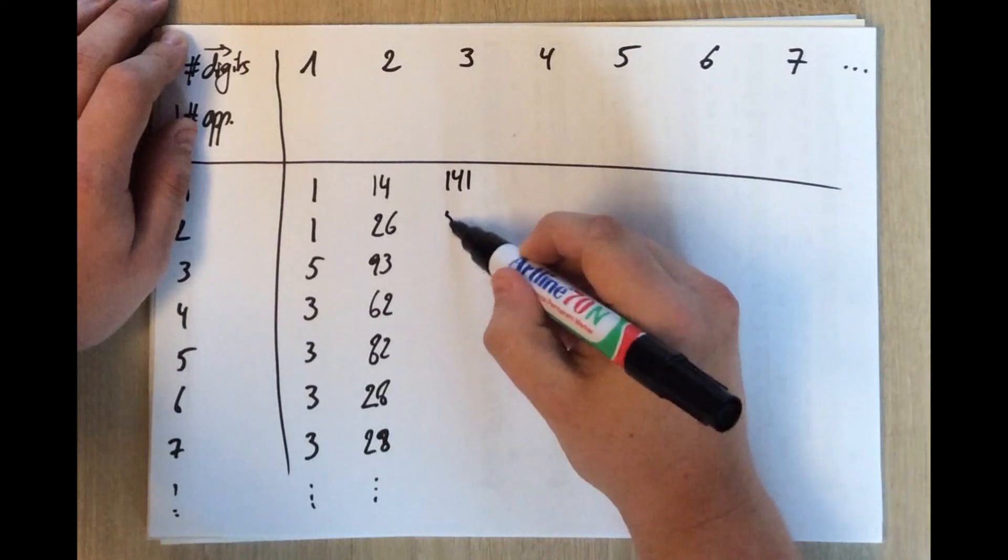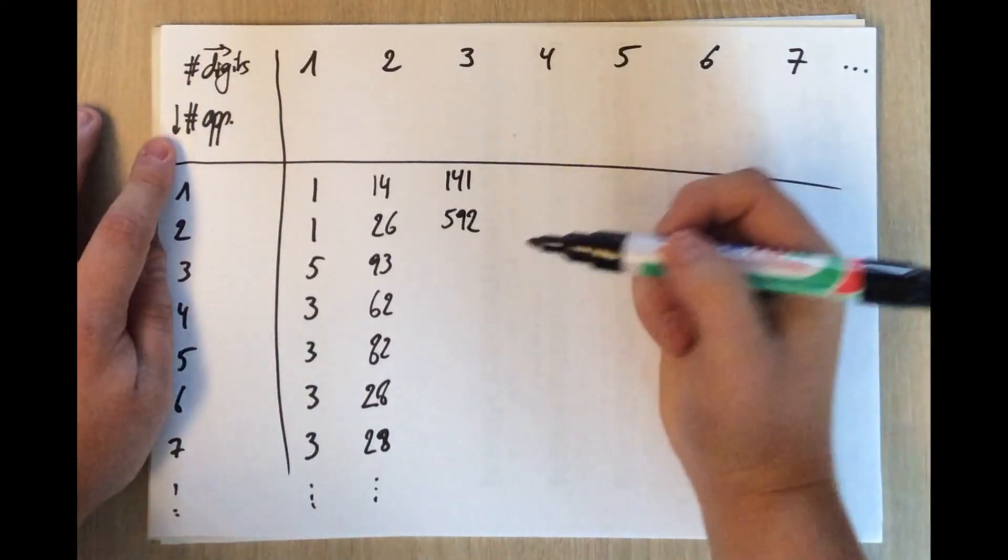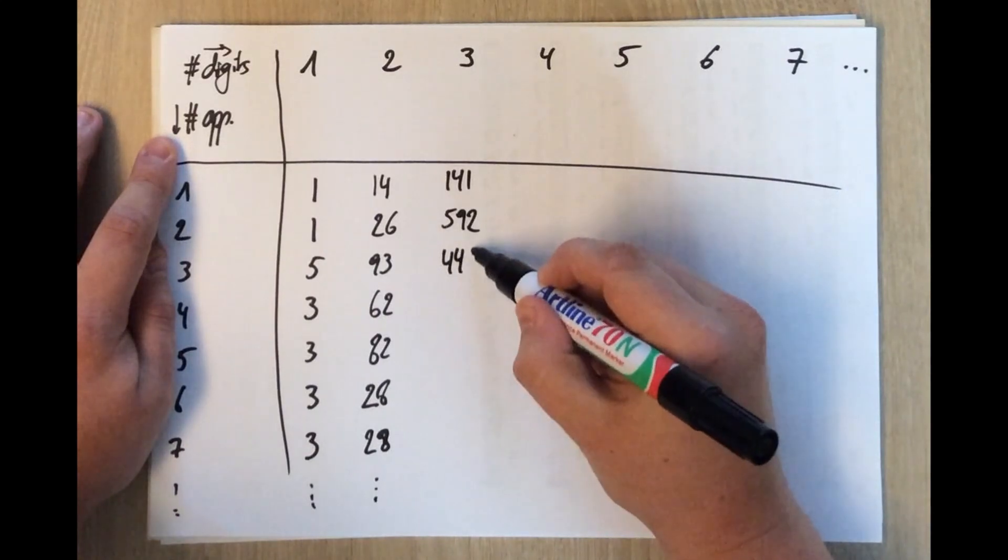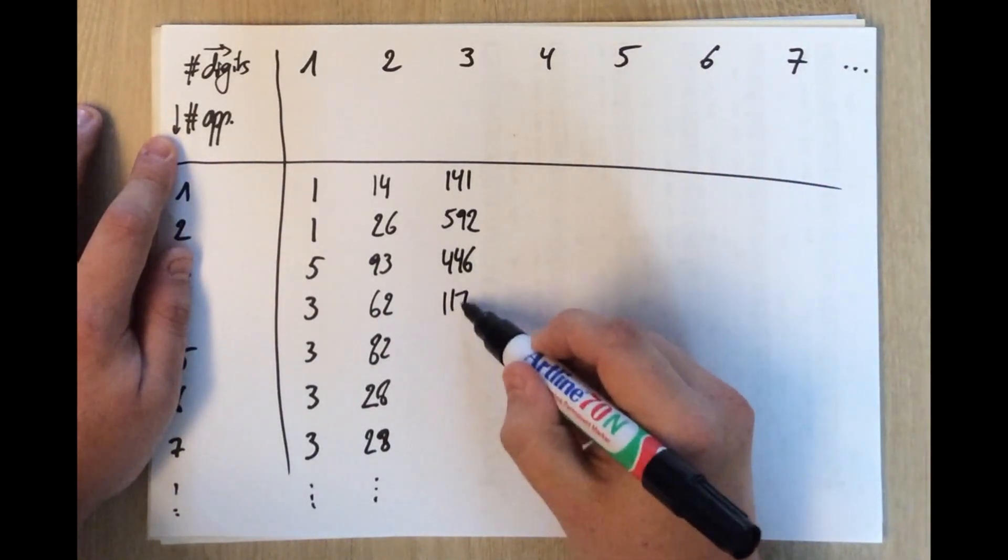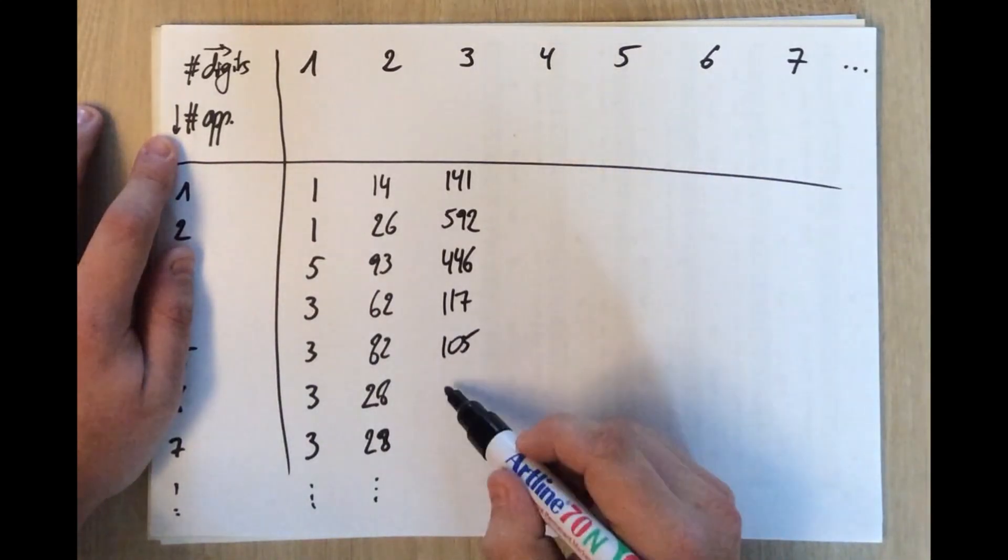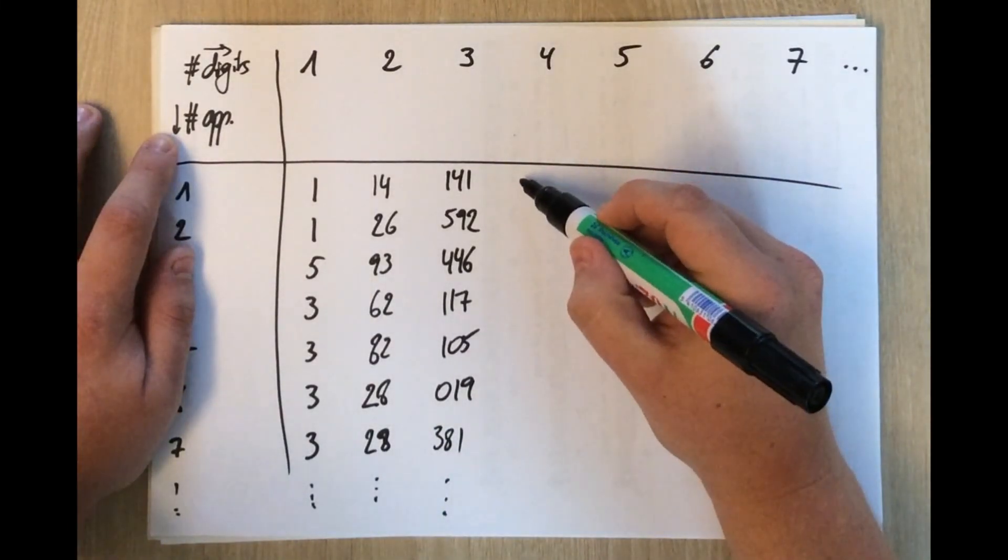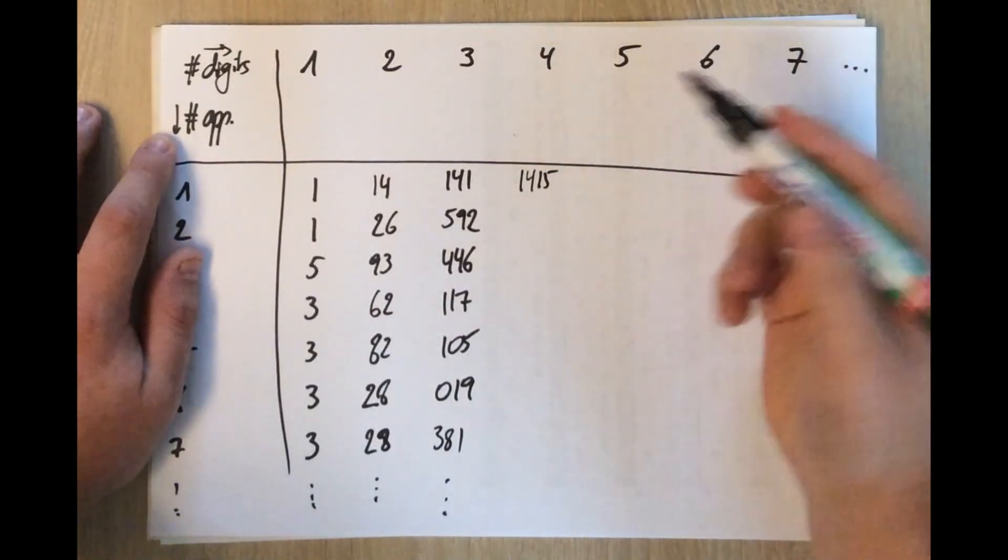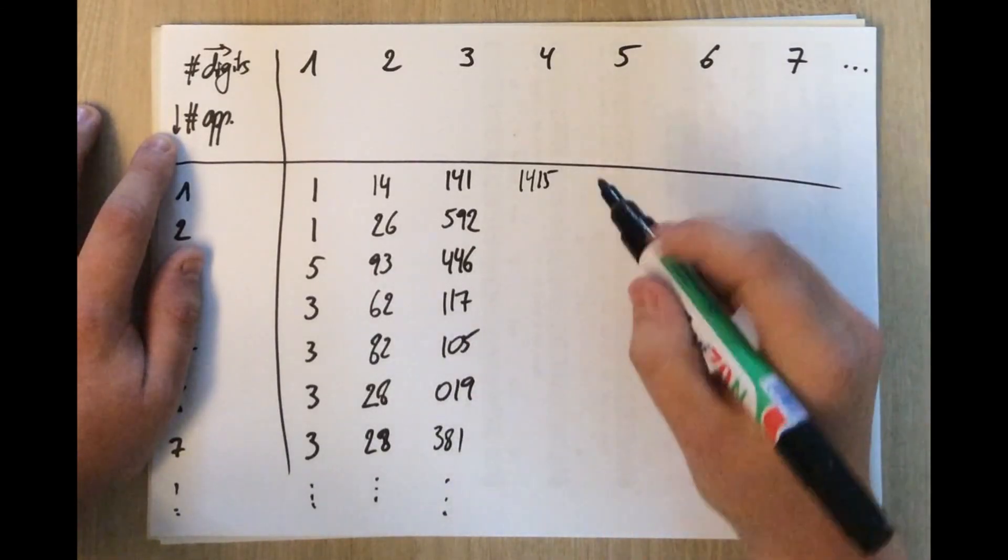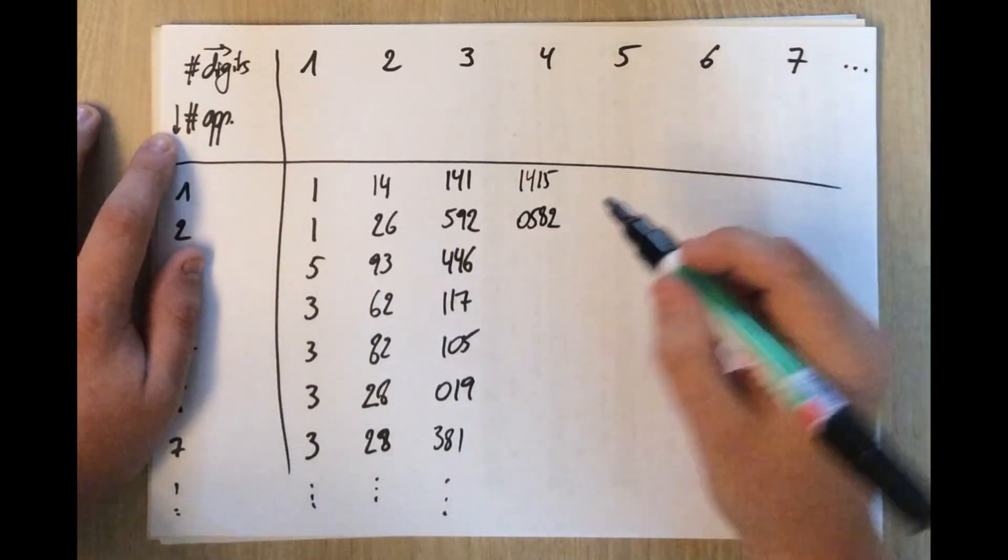Three-digit numbers. We already found two of them. It appears that the first three-digit number to appear three times would be 446. Then we have 117, 105, 019. Watch out! We consider this a three-digit number. Of course, if we just read it out loud, it would be 19, which had two digits. But because we're looking for certain substrings of a certain length, the leading zeros are taken into account. And 381, and so on. Four digits. Of course, the first one is always the same, starting at the first place after the decimal point.